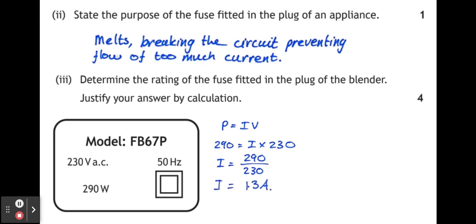Since 1.3 amps is less than a 3 amp fuse, that means a 3 amp fuse should be fitted. If the current required had been more than 3 amps, then a 3 amp fuse would be no use because it would have broken when the appliance was working normally.